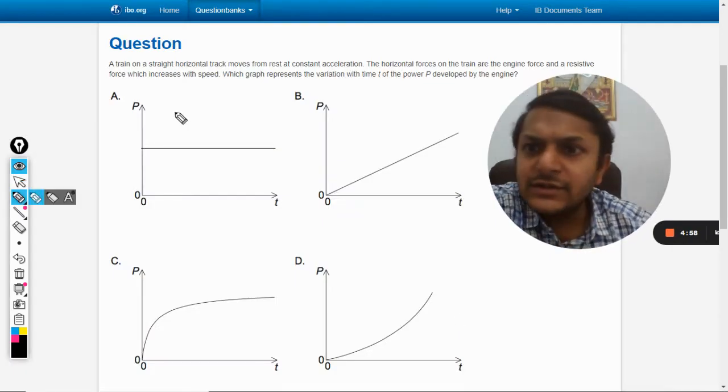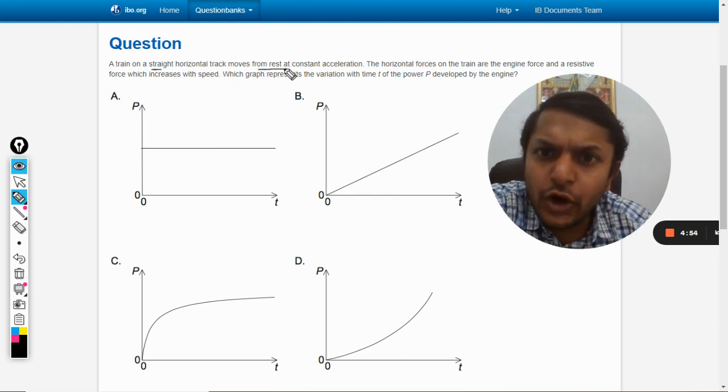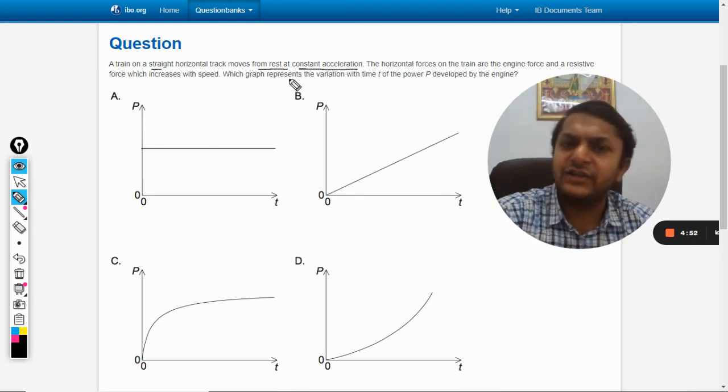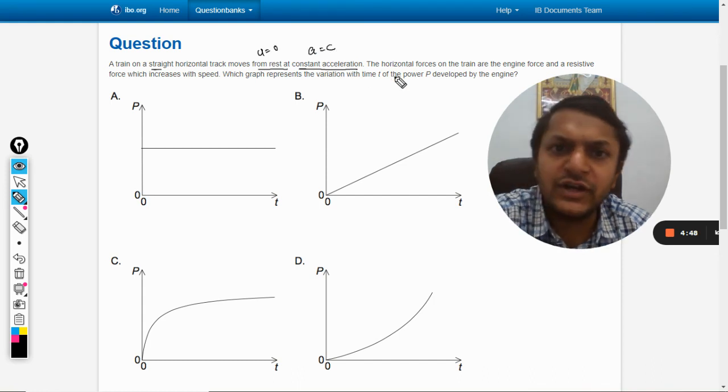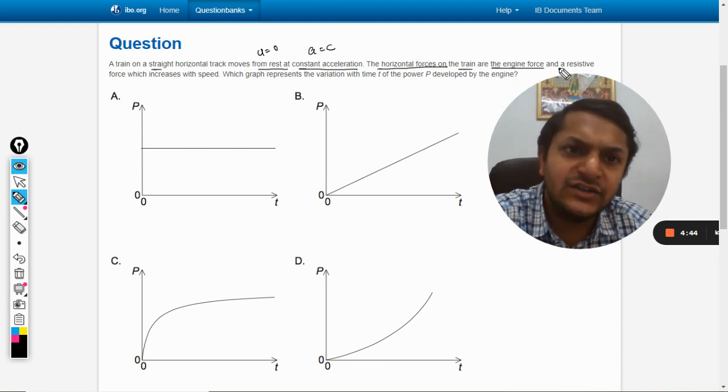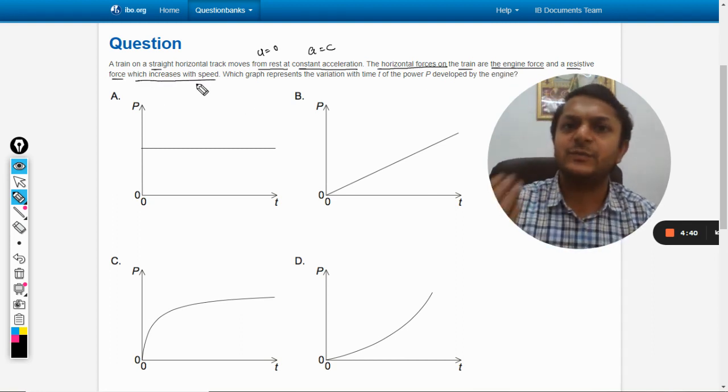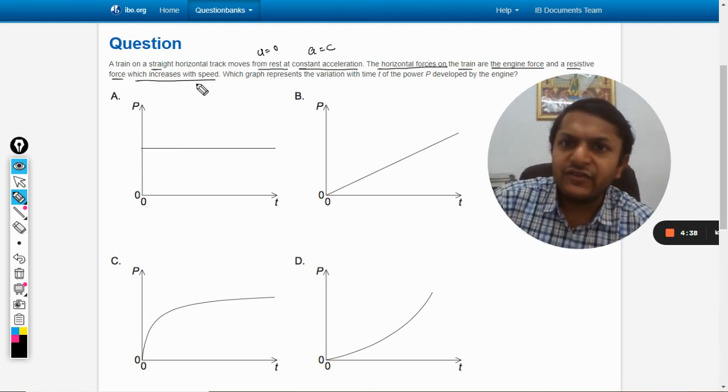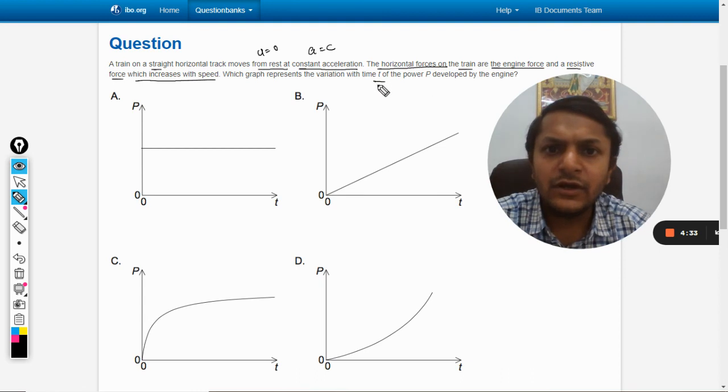In this question, a train on a straight horizontal track moves from rest at constant acceleration, so u is zero and acceleration is constant. The horizontal forces on the train are the engine force and a resistive force which increases with speed. Which graph represents the variation with time t of the power p developed by the engine?